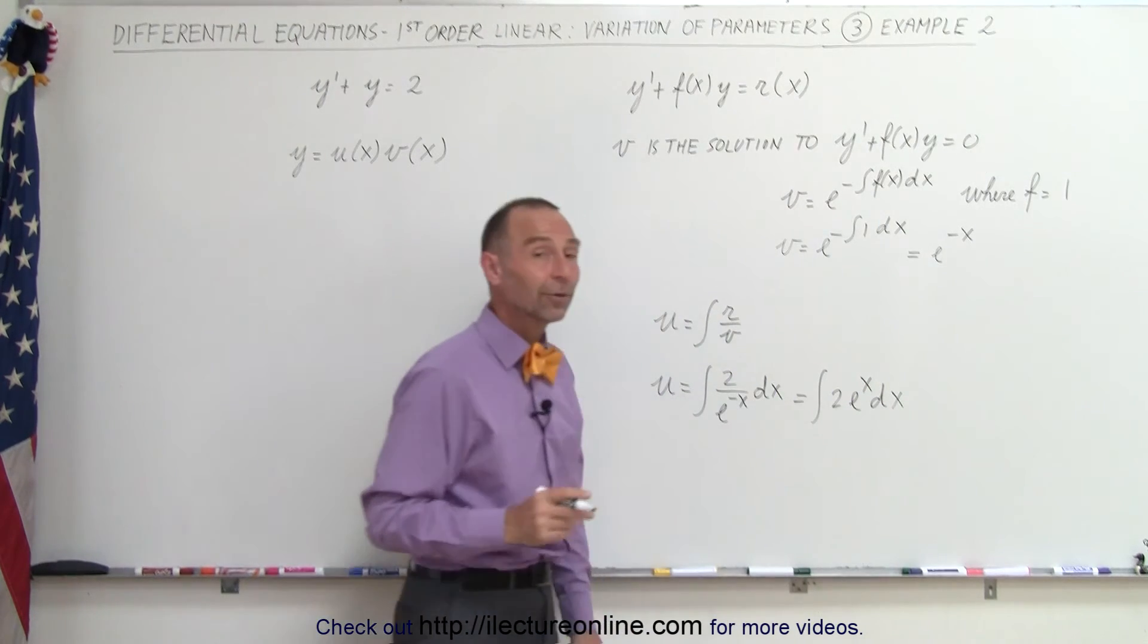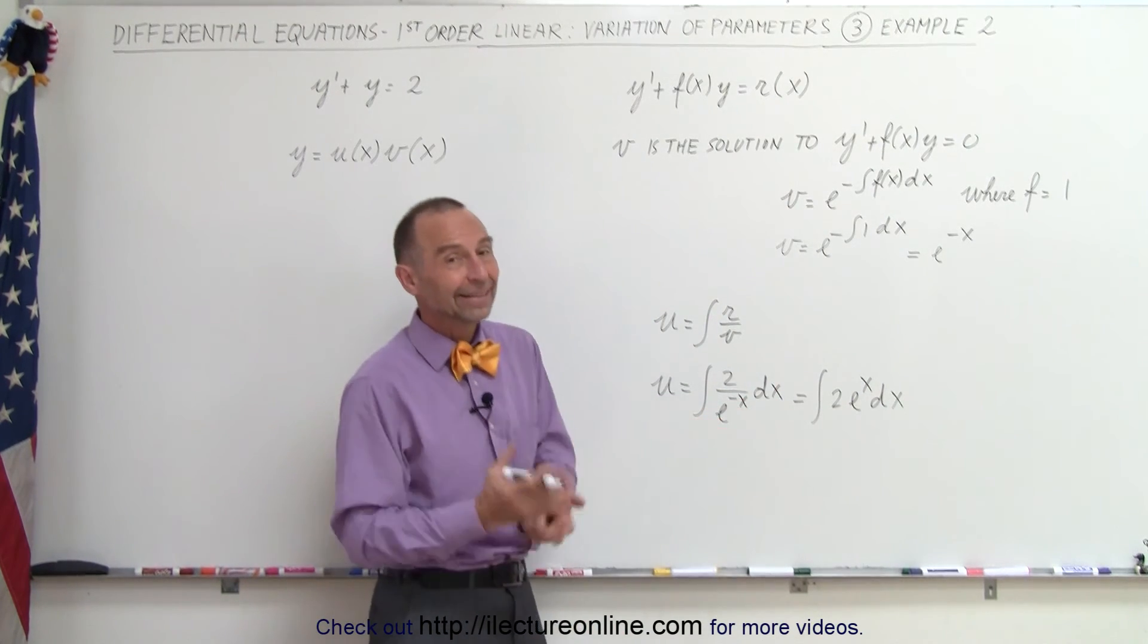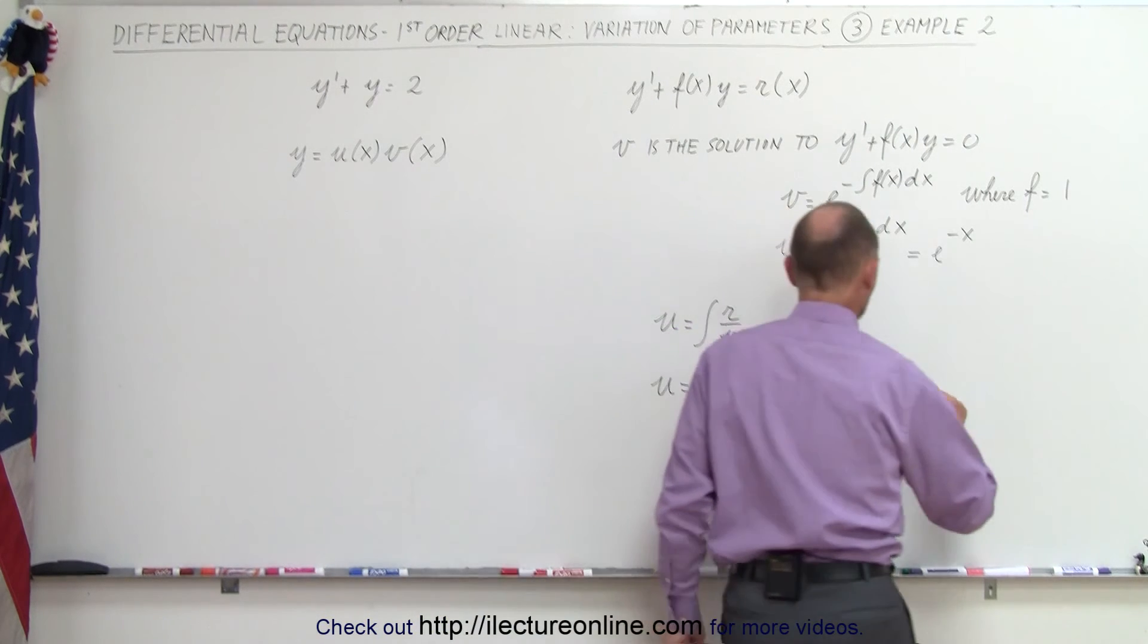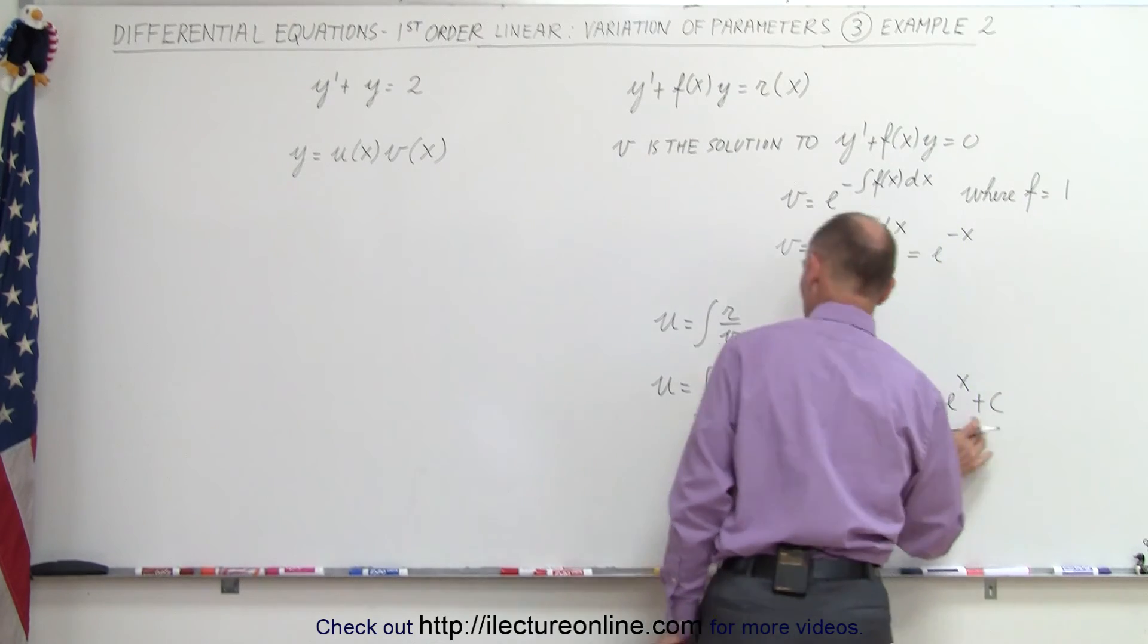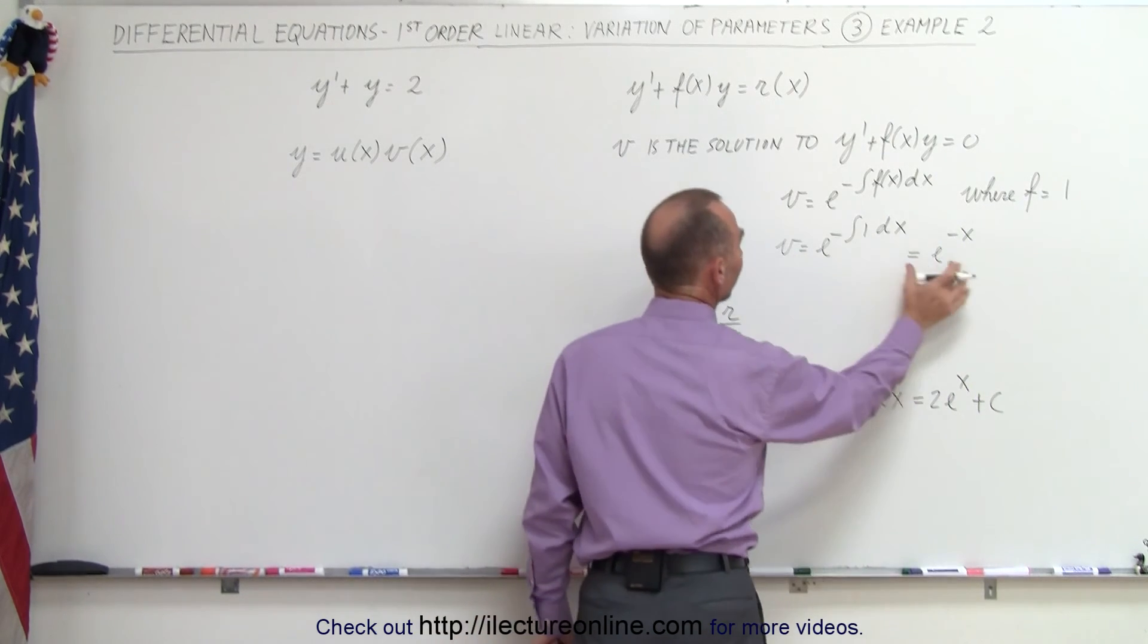And that is fairly straightforward to integrate. The 2 comes outside. The integral of e to the x is e to the x. So this is equal to 2 e to the x plus a constant of integration. Now, this is equal to u.